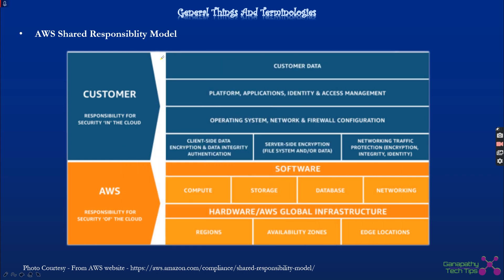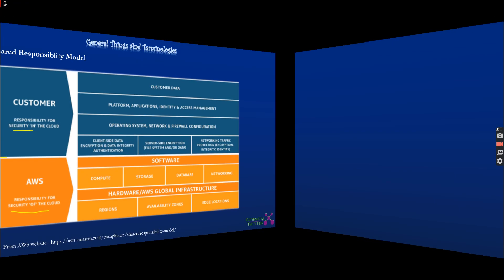One important thing we can expect questions on in the exam is the AWS Shared Responsibility Model. We need to understand two things: security of the cloud and security in the cloud. Security of the cloud is completely managed by AWS — all the compute, storage, databases, hardware, regions, and availability zones. But when it comes to security in the cloud, while deploying applications and software, we manage that ourselves: platforms, applications, OS, data encryption, networking, and customer data.